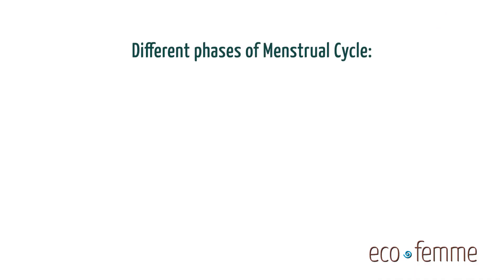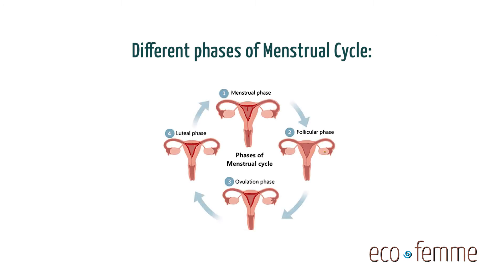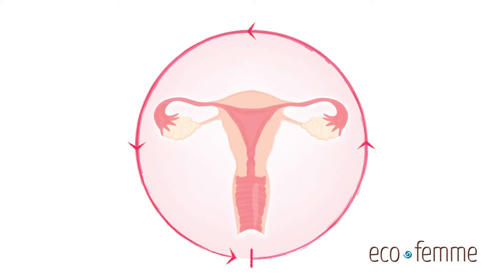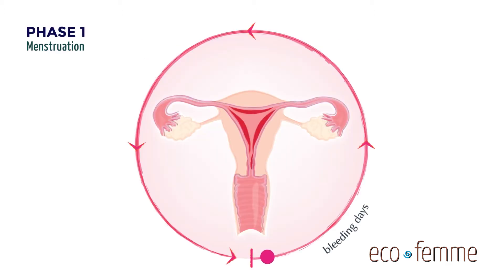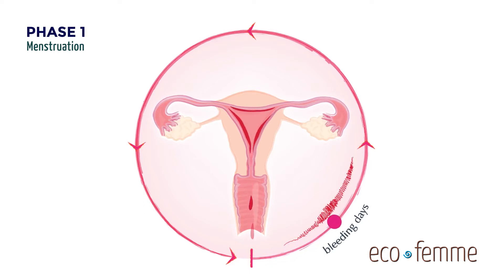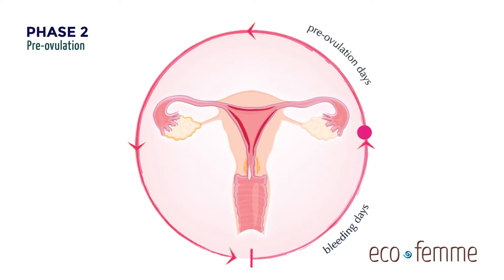The menstrual cycle repeats every 28 to 30 days, although it can be shorter or longer as every woman is unique. There are four phases of the menstrual cycle, controlled by different hormones in the body. The first is menstruation, when the nutrient-rich lining is released through the vagina; it lasts for two to seven days, on average three to five days. Next is pre-ovulation, when an egg is maturing in the ovary and simultaneously the uterus builds a nutrient-rich lining on the uterine wall.